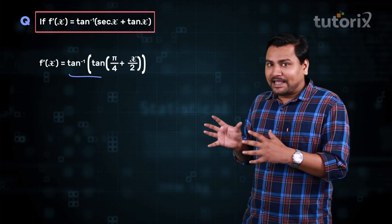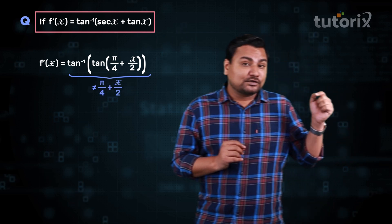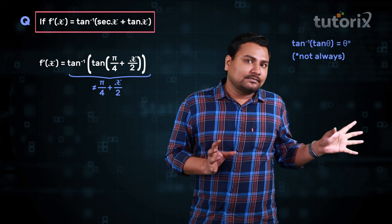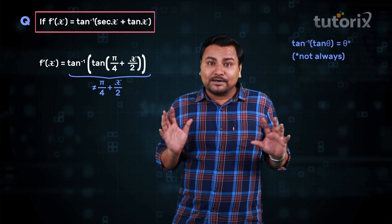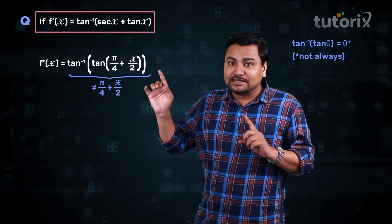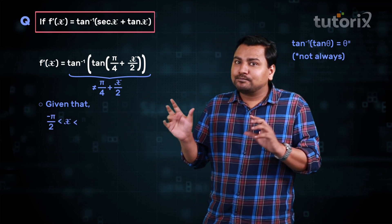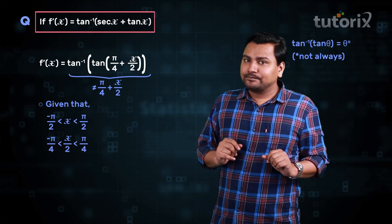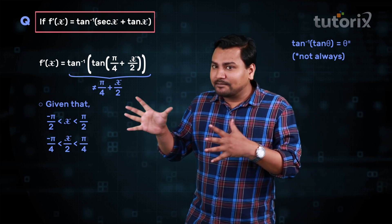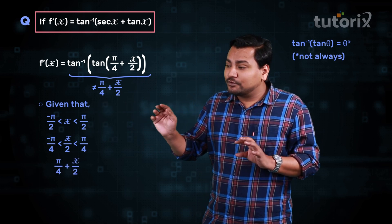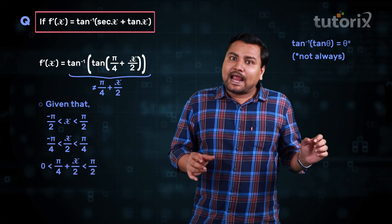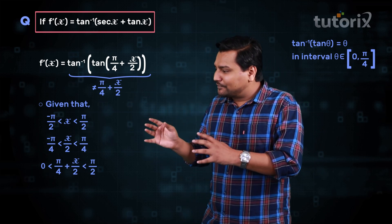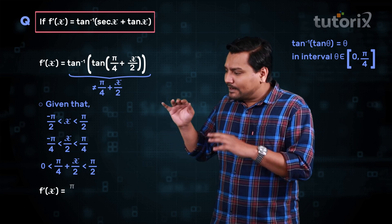We are not going to write this directly as π/4 plus x/2, because tan inverse of tan θ is not always equal to θ — we need to check the interval of the argument. Using the given information that x is in between minus π/2 to π/2, we get x/2 is between minus π/4 to π/4. Since our argument is x/2 plus π/4, adding π/4 gives us the argument in between 0 to π/2. Since tan inverse of tan θ equals θ on that interval, f'(x) equals π/4 plus x/2.